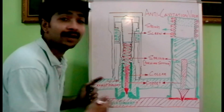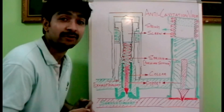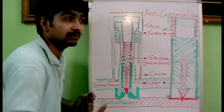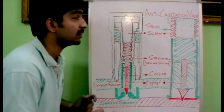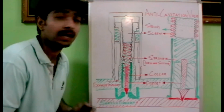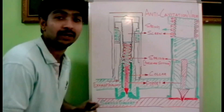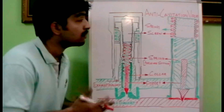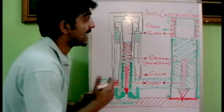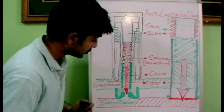This valve is used to avoid cavitation. What is cavitation? Bubbles are creating a small liquid-free zone, which could result in failures of the accumulator. So to avoid cavitation, an anti-cavitation valve is used.